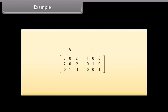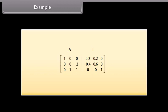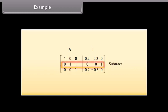In this example, the first step is to add row 2 to row 1. Then divide row 1 by 5. Then take 2 times the first row and subtract it from the second row. Multiply the second row by −1/2. Now swap the second and third rows. Last, subtract the third row from the second row. And we are done.